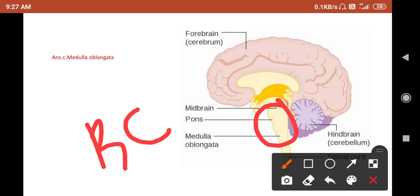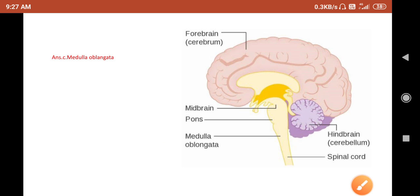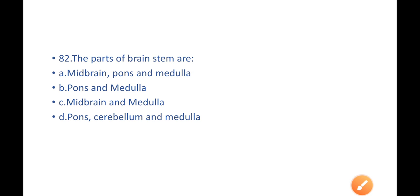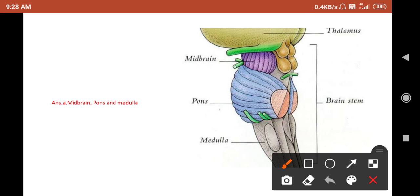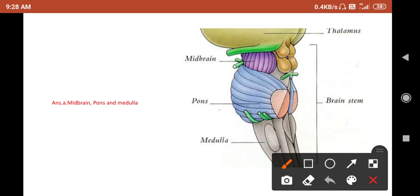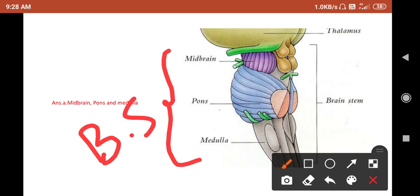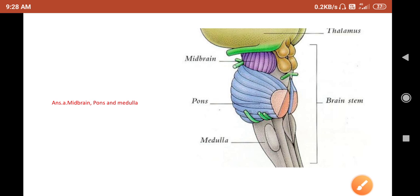Next question: the parts of the brain stem are — A) midbrain, pons, and medulla, B) pons and medulla, C) midbrain and medulla, or D) pons, cerebellum, and medulla. The brain stem has three parts. The answer is A — midbrain, pons, and medulla. Remember this question.